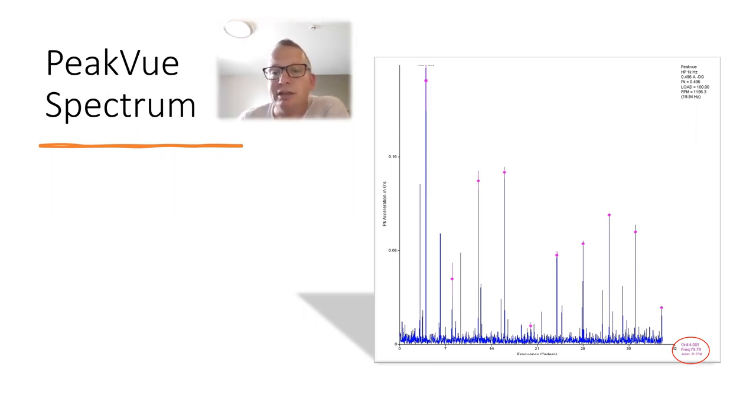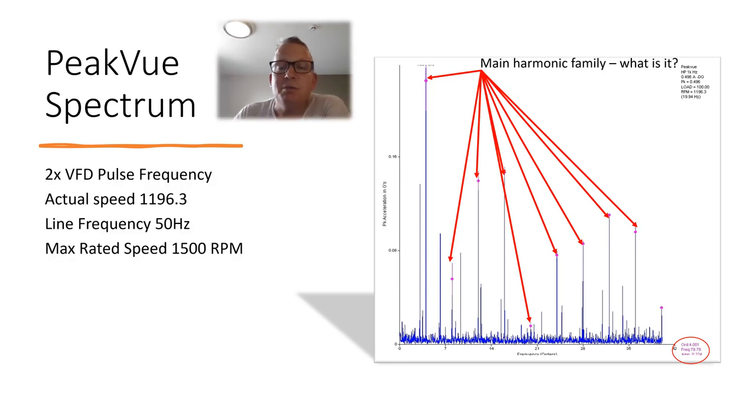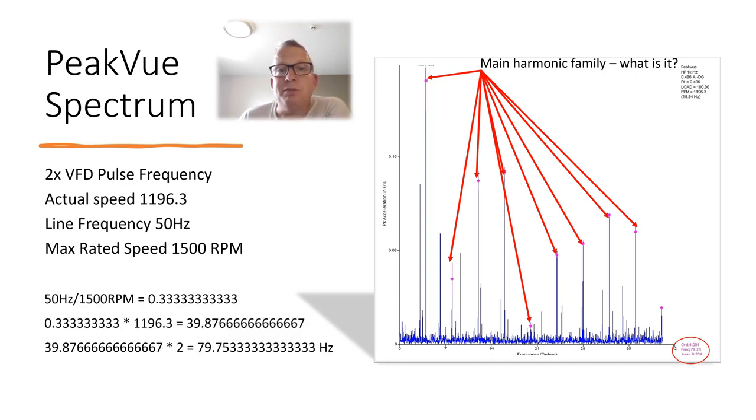So we've got this activity here and you see down here what order it's at. So what is this harmonic family? We're doing an asset assessment, is it to be of concern? Well this is a motor on a variable speed drive, so we've got the actual speed was tacked at 1196.3, 59 hertz, max rated on four poles for 1500 RPM.